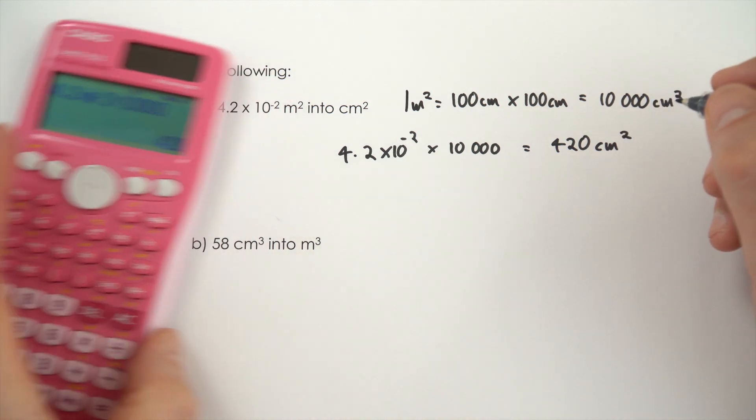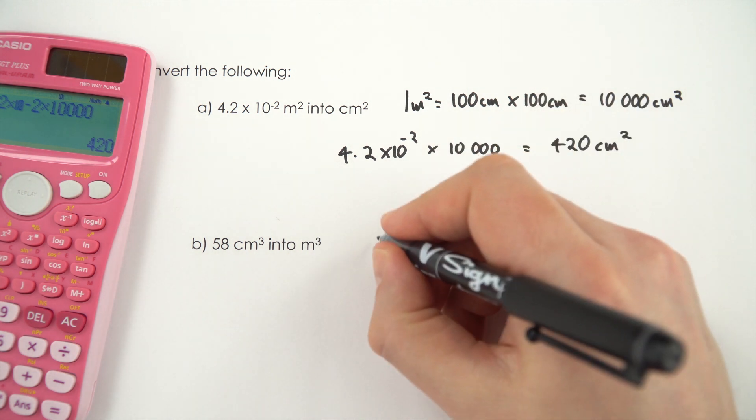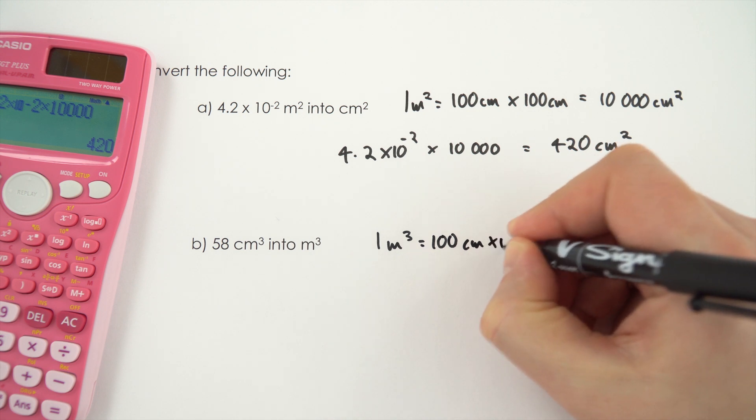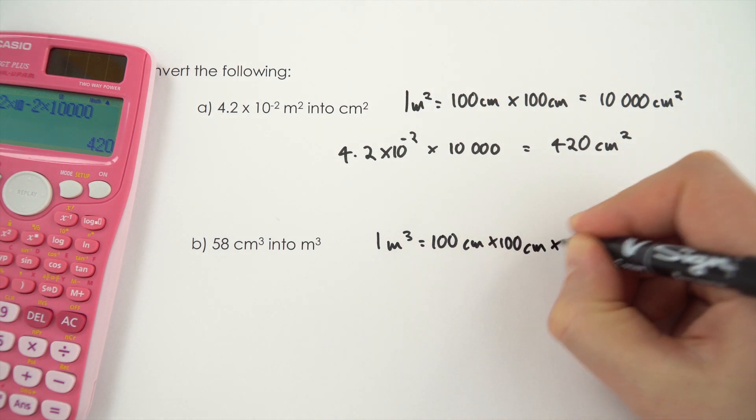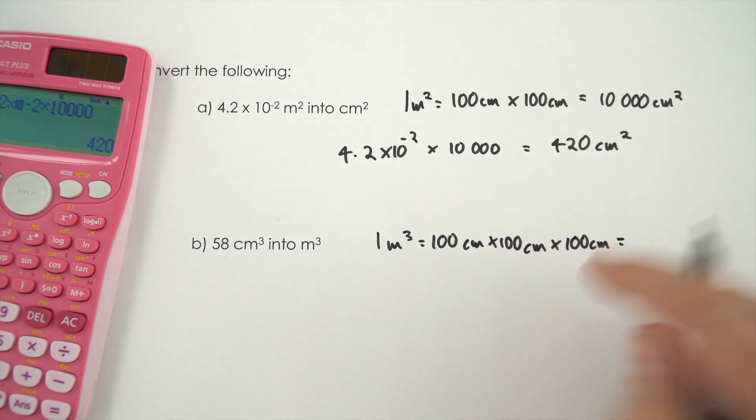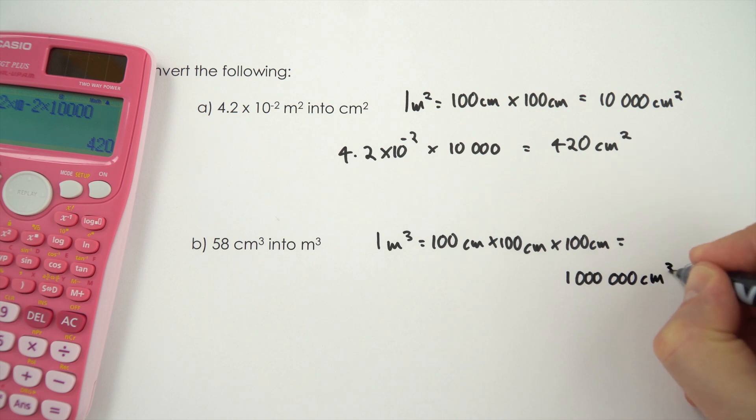Now for the second example we're going to convert from cubic centimetres into cubic metres and again if you have a cubic metre that's made up of a hundred centimetres by a hundred centimetres by a hundred centimetres. So if we do 100 times 100 times 100 that's equal to a million cubic centimetres.